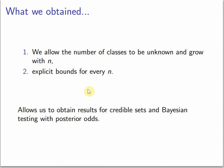What we obtained is that we allow the number of classes to be unknown and grow with n, and we have explicit bounds for every n. These explicit bounds allow us to obtain results for credible sets and hypothesis testing with posterior odds.